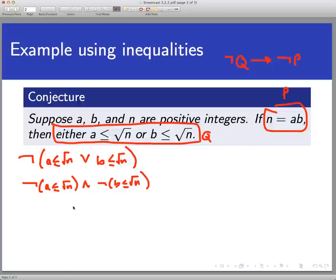That's what we call De Morgan's laws back when we first learned about logical equivalencies. Now just one more step I think we'll be able to write this. When I negate this inequality, I get this inequality. So a is greater than radical n, and b is greater than radical n. Now I think that gives us enough information to write down the contrapositive.